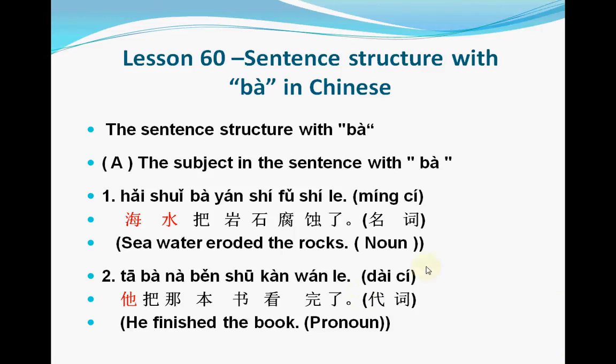First, let's talk about the subject in the sentence with 把. The subject in the sentence with 把 is usually a noun, pronoun, verb, object, noun phrase, or phrases. And it is the one who makes the action of the verb predicate.